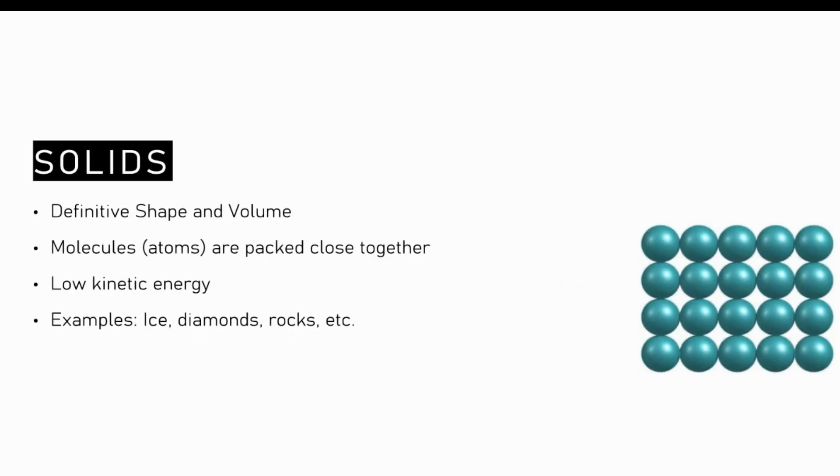Now let us look at each state of matter individually, beginning with solids. Solids are materials with a definite shape and volume. That simply means there is no changing of the shape or volume regardless of what container the solid is placed in. This is because the molecules that make it up are packed closely together and move very slowly.